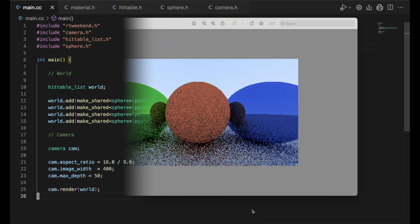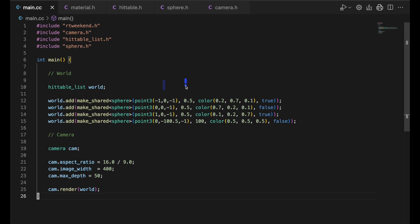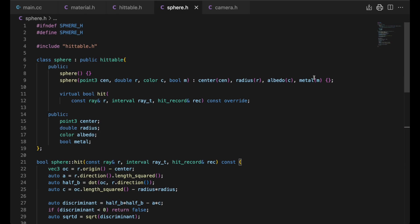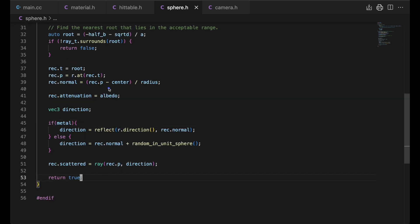To review, each sphere is instantiated with its center, radius, color, and its material. True means metallic, and false means diffuse. If there is a hit, we set two properties on the hit record output parameter: how it's attenuated and how it's scattered, and send it out into the world.